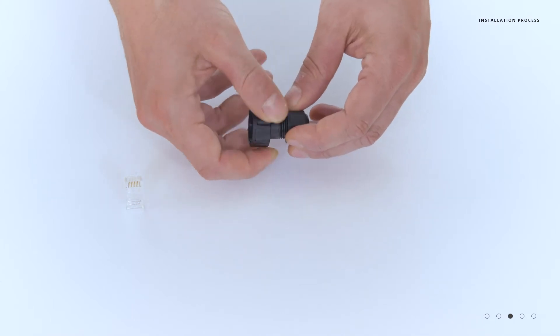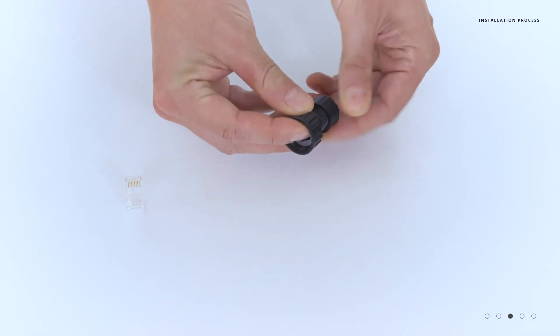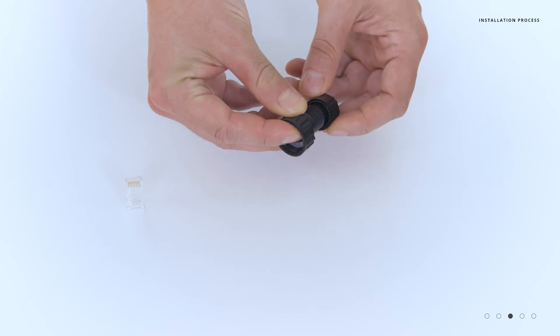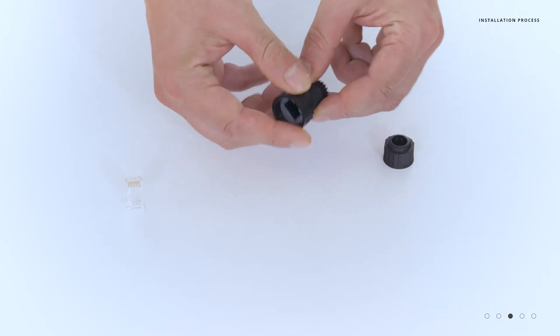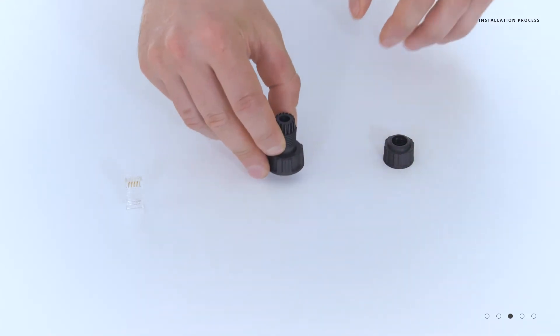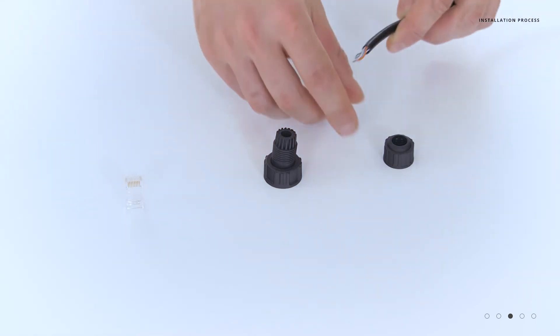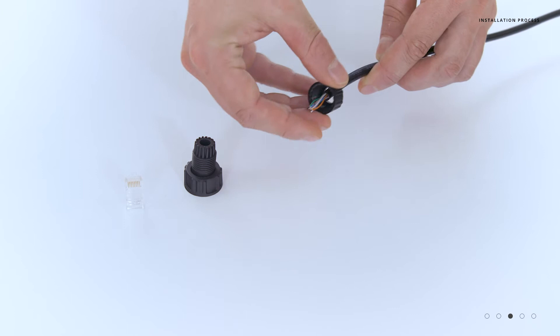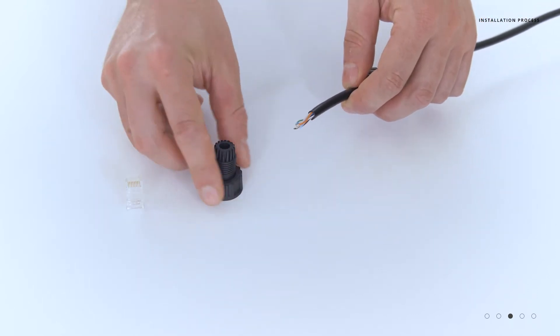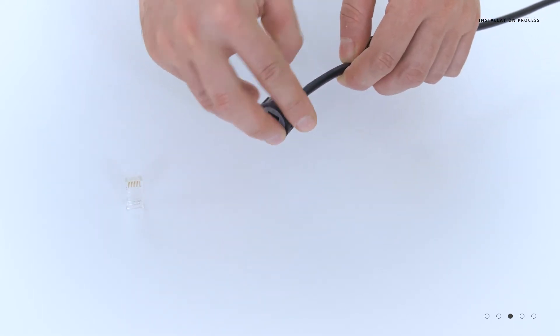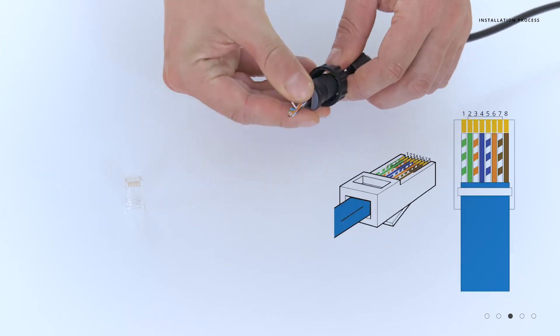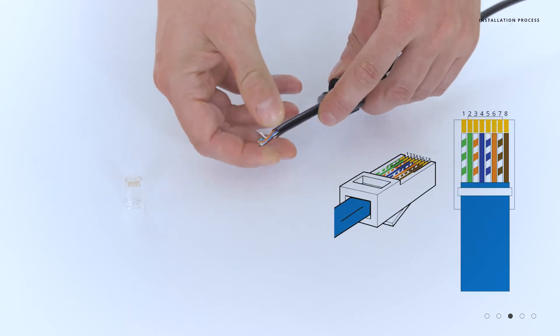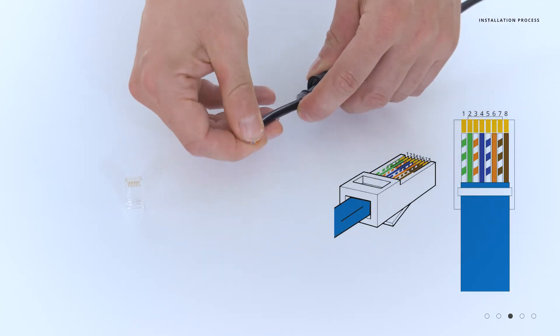Next, take the IP65 cable gland and unscrew the smaller collar. Take your ethernet cable and feed it through the smaller side of the collar, through the cable gland and out the other side where the RJ45 connector would go.